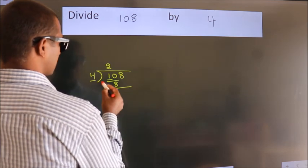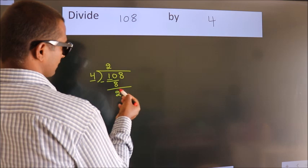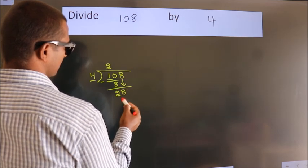Now we should subtract, we get 2. After this, bring down the beside number. So 8 down. So 28.